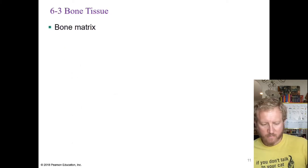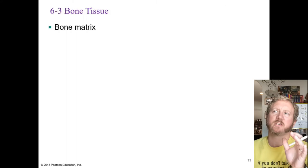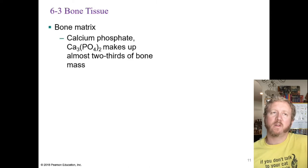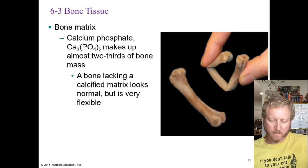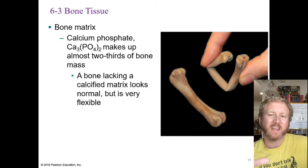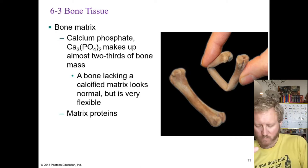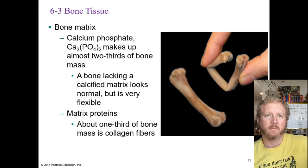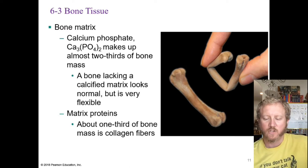The bone matrix is primarily calcium phosphate, making up two-thirds of the mass of your bone — one reason bone is so slow-growing. A bone lacking this mineralized matrix still looks like a bone but is very flexible, because the remaining one-third consists of collagen fibers. Without the solid mineral matrix, a bone is almost like rubber.